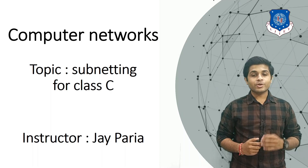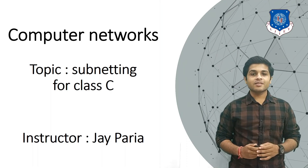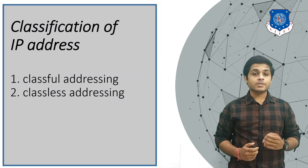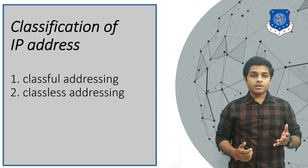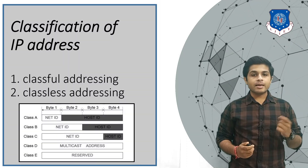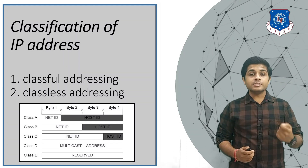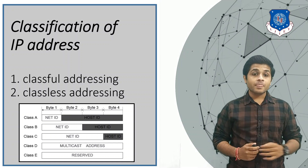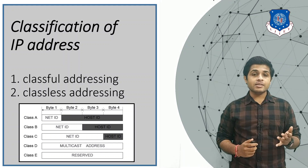Hi everyone, this is Joy, your instructor for computer networks. The topic we are going to see is subnetting for Class C. The IPv4 address length is 32 bits, so 2 to the power 32 means 4 billion IPv4 addresses. To distribute these addresses efficiently, they are divided into classes: Class A, B, C, D, and E. Class A, B, and C are unicast IP addresses, meaning those IP addresses are for one device only. Class D is multicast and Class E is reserved for development purposes.